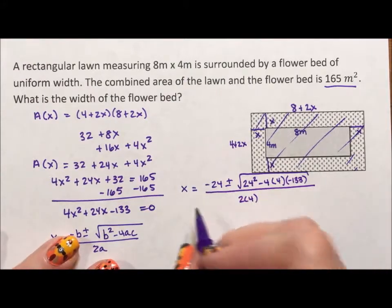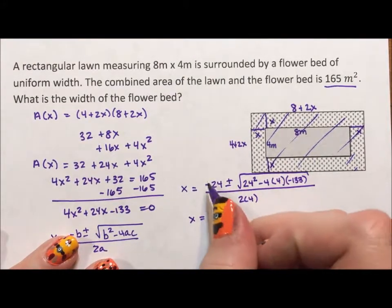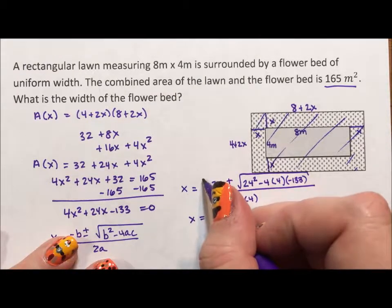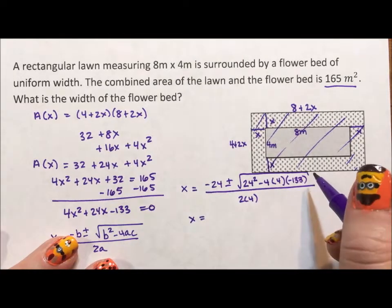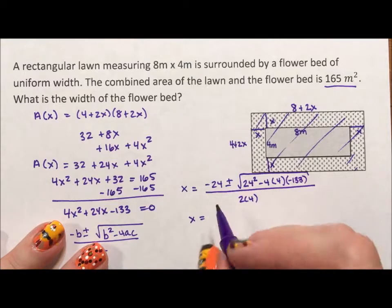If I put this into my calculator, the two answers I get. And make sure you are really careful. Make sure the negative 24 is part of the numerator when you put it into the calculator. That means you're probably going to need to put an extra set of parentheses around. Practice. Make sure you know how to punch all this into your calculator.